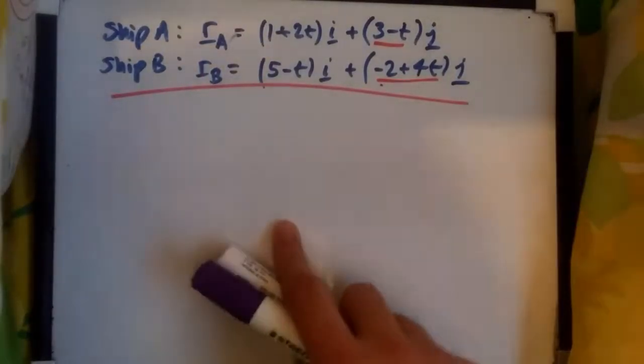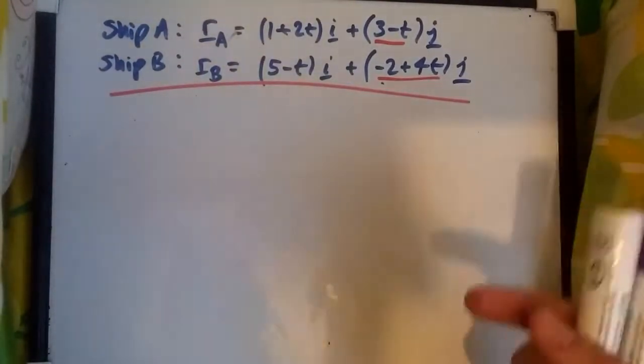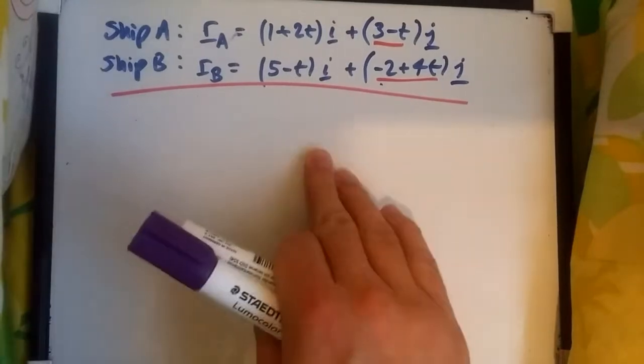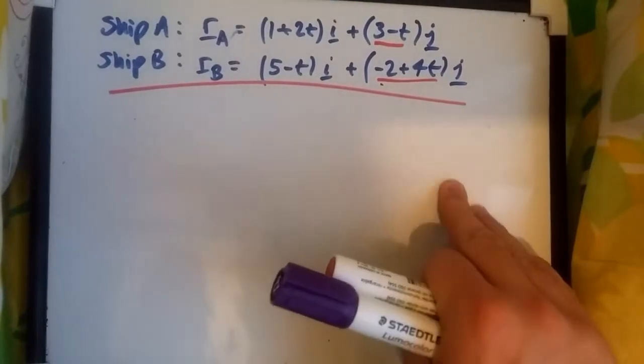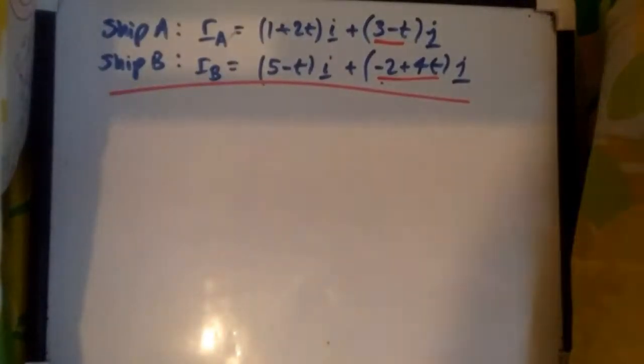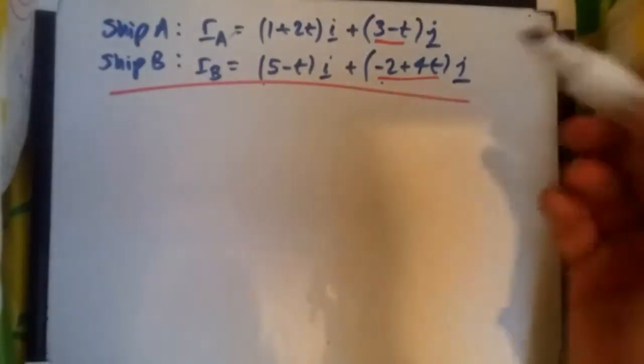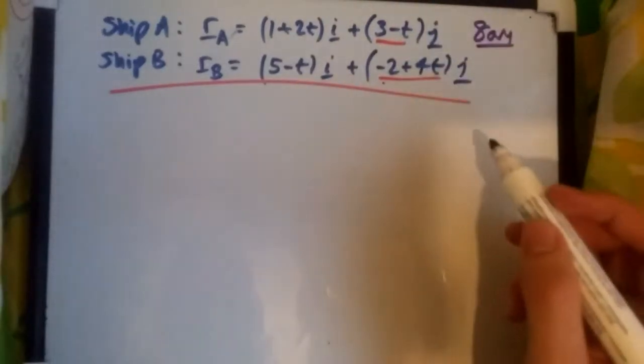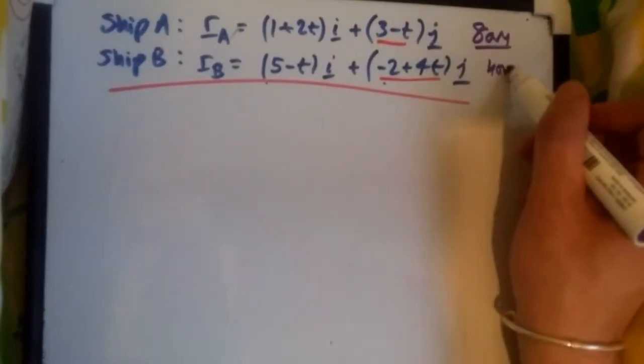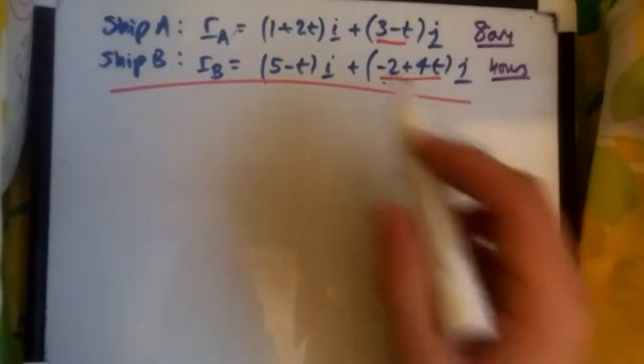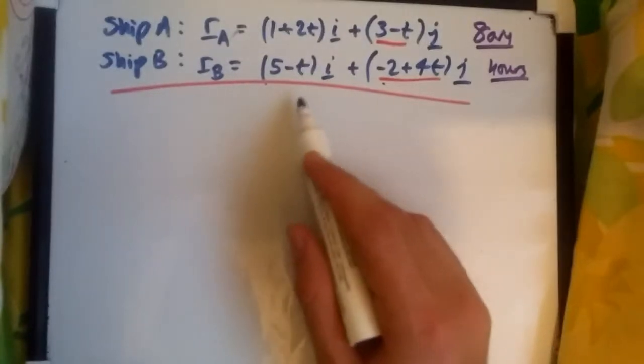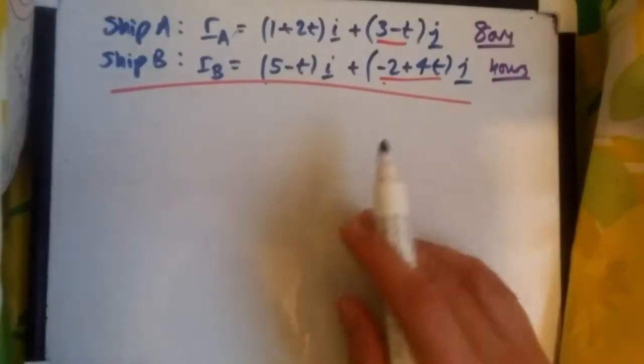Welcome back to another video. This one will be looking at how to calculate the distance between two different ships at a certain time t. So suppose these two ships had position vectors at 8 a.m. This is the time 8 a.m., and we're going to be working in hours. Units are always important to know what value to choose for t.